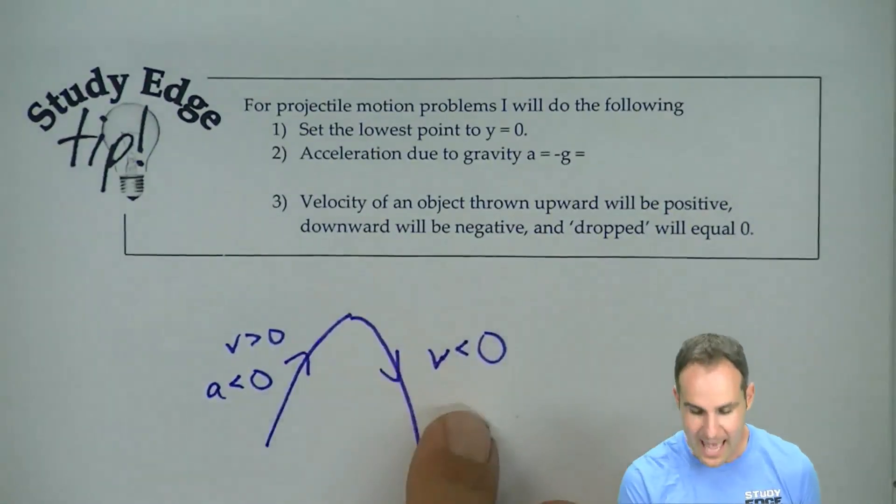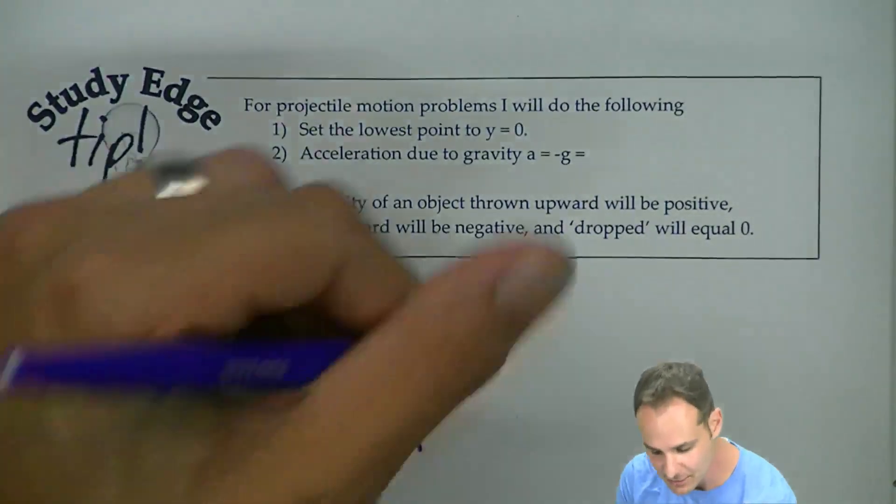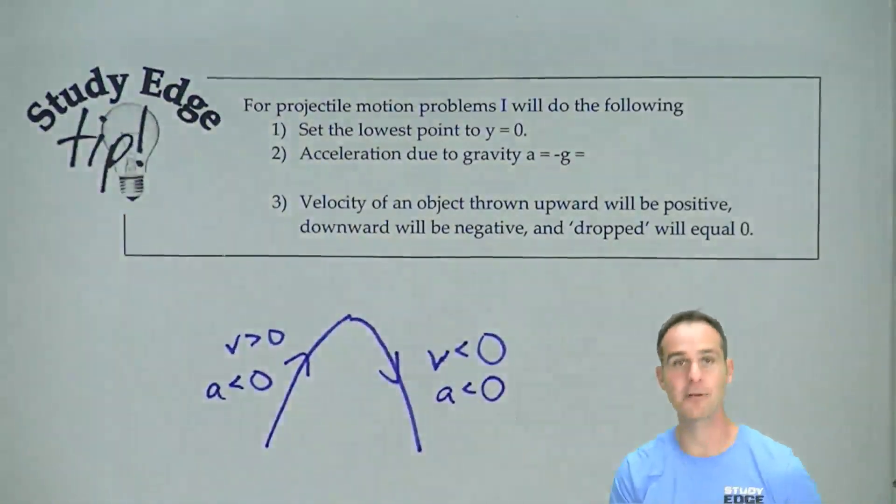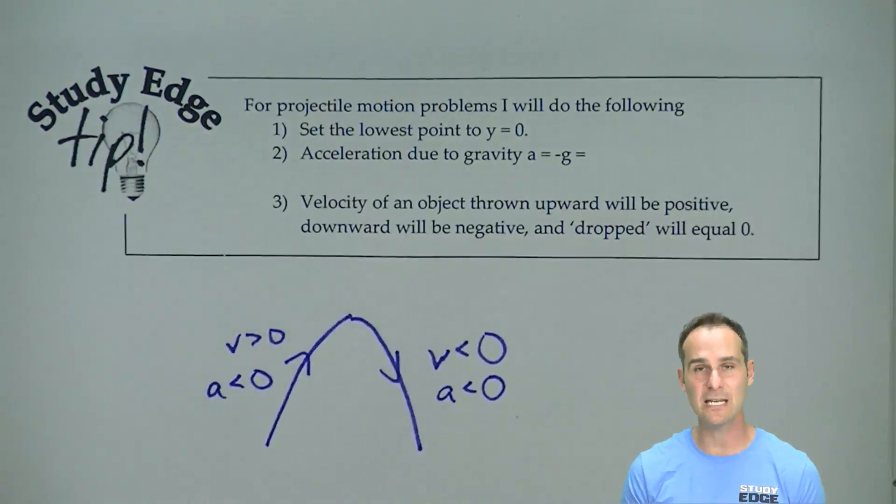Then on the way down, is it speeding up or slowing down? It's speeding up, which means velocity and acceleration will have the same sign, making acceleration negative, which means the whole time acceleration due to gravity is going to be negative g.